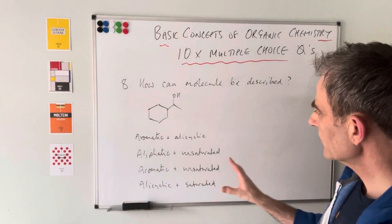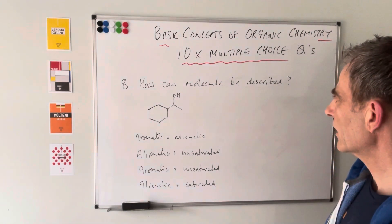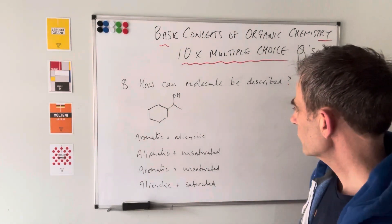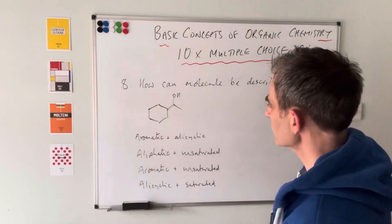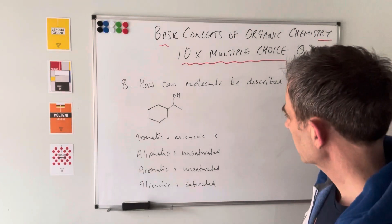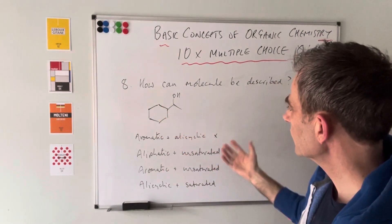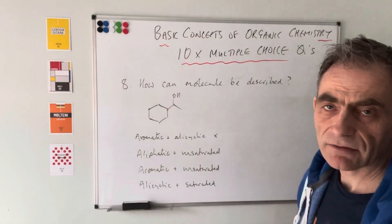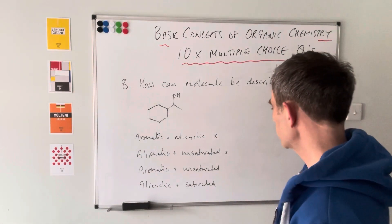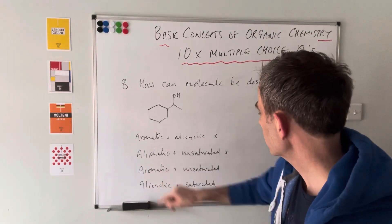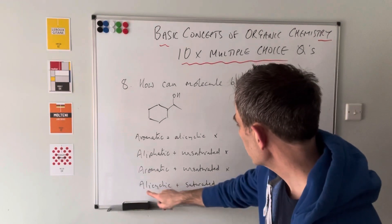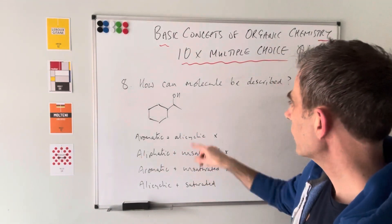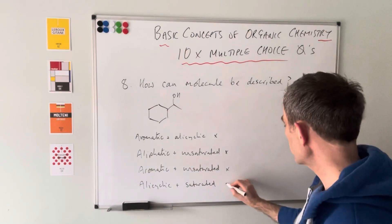Question eight: how can this molecule be described? It's not aromatic — no benzene ring. It is aliphatic, but it's not unsaturated because it has no benzene rings and no carbon-carbon double bonds. It is alicyclic — it's a ring that isn't a benzene ring — and it is saturated, as all carbon-carbon bonds are single bonds. So the correct description is alicyclic and saturated.